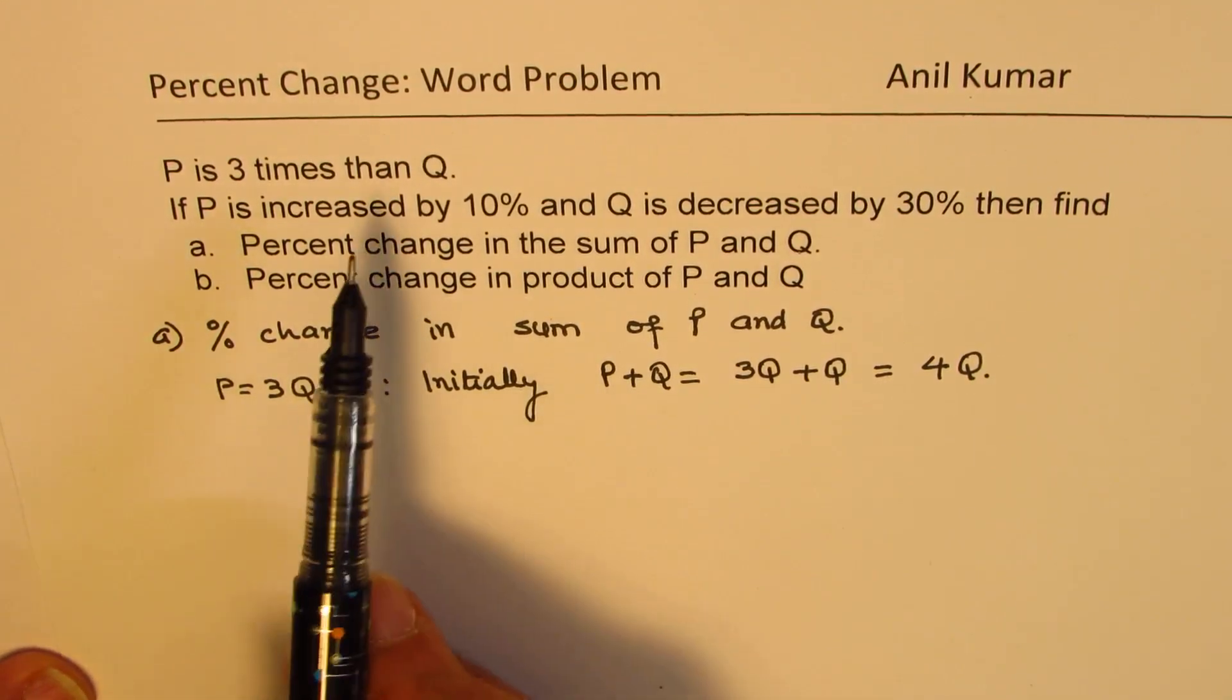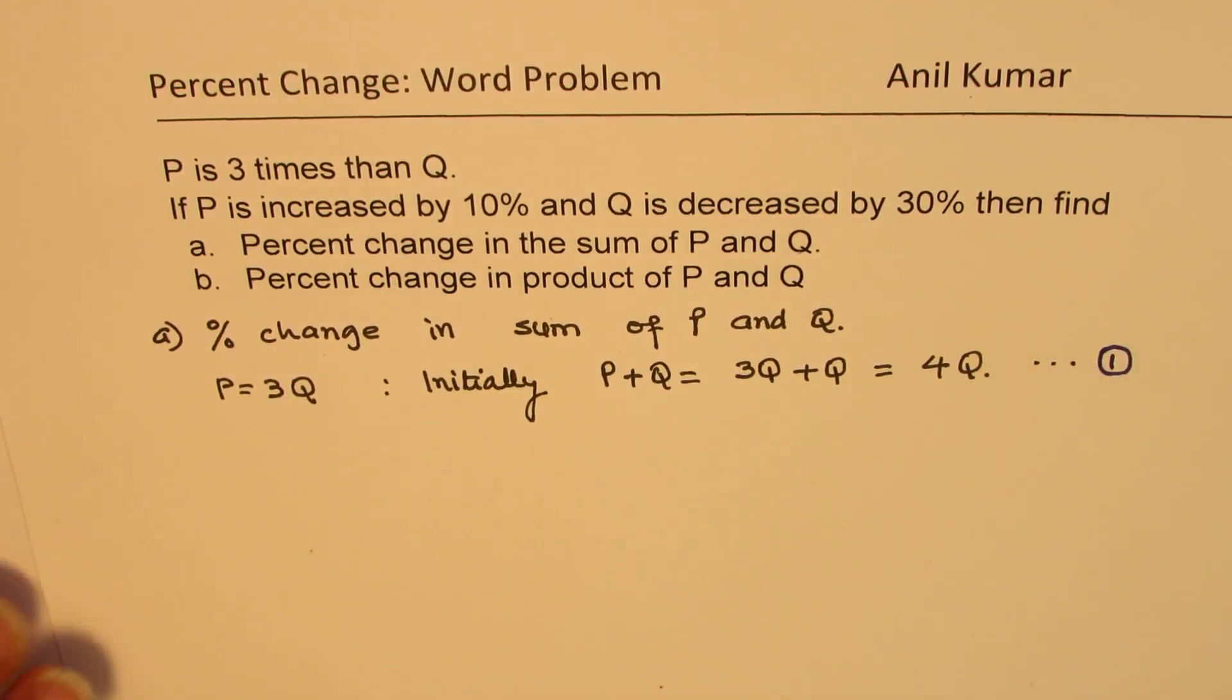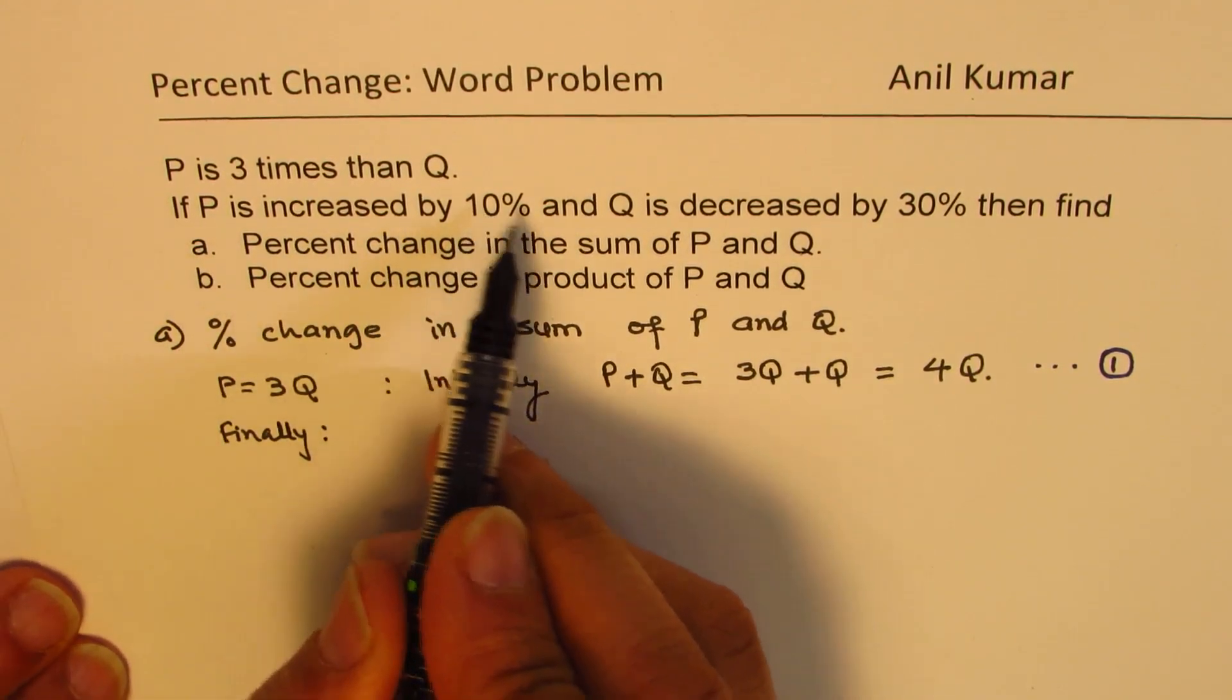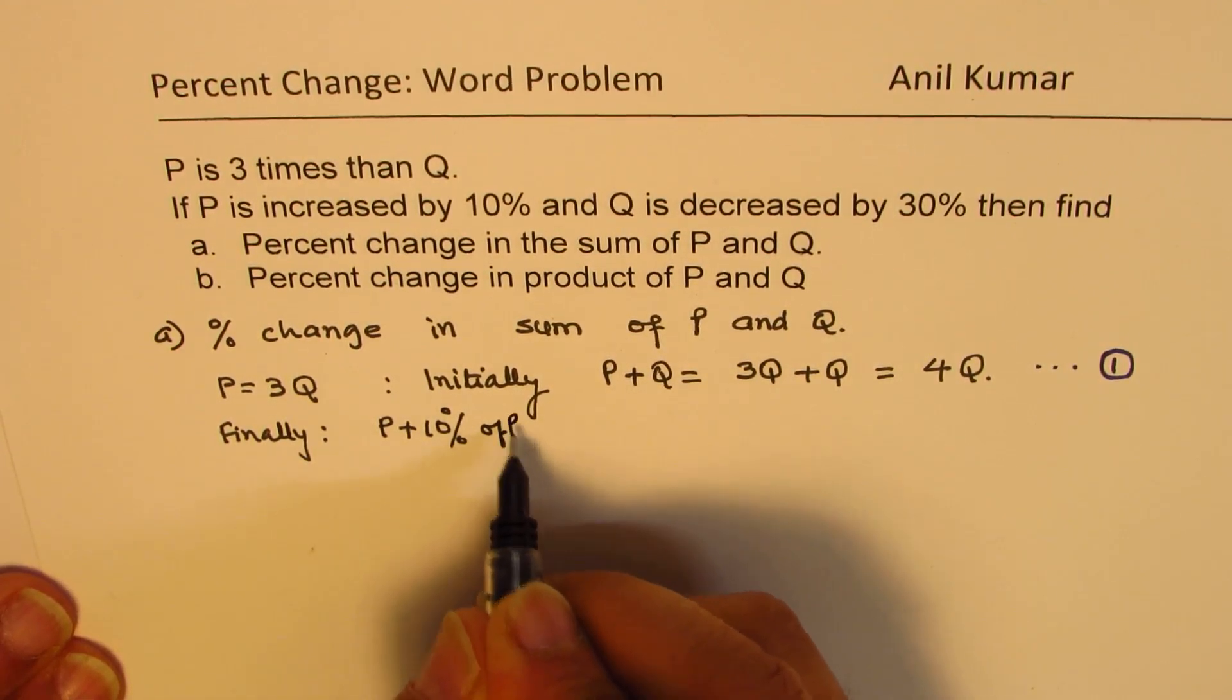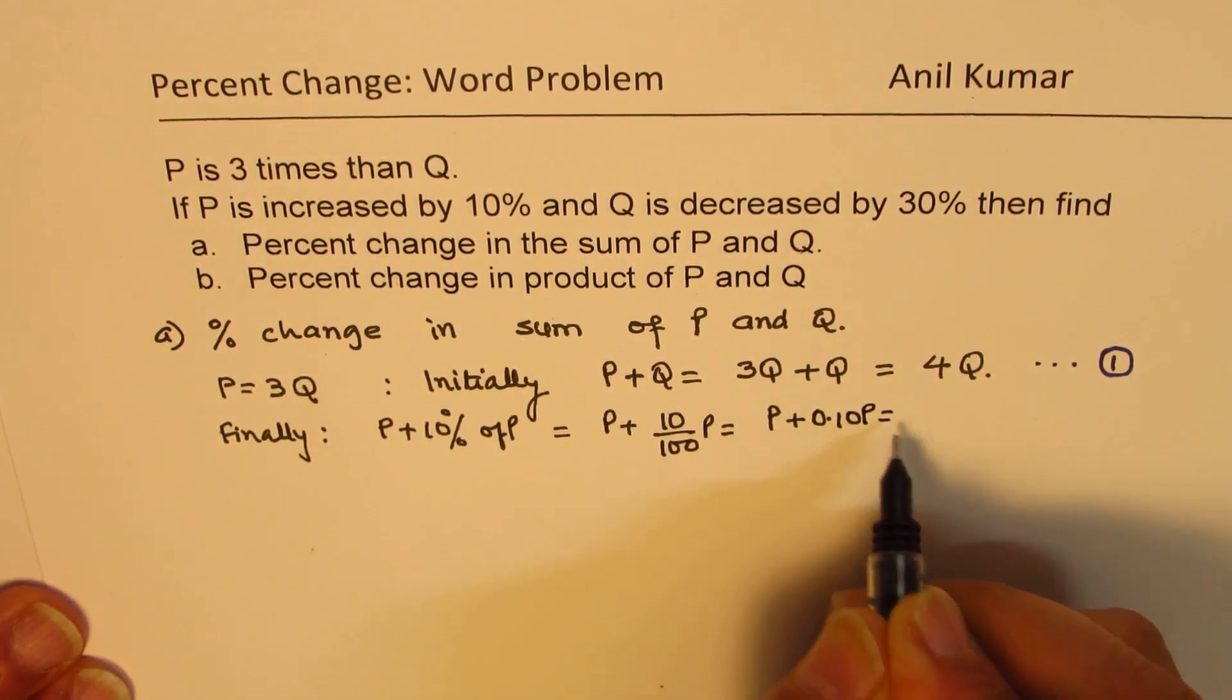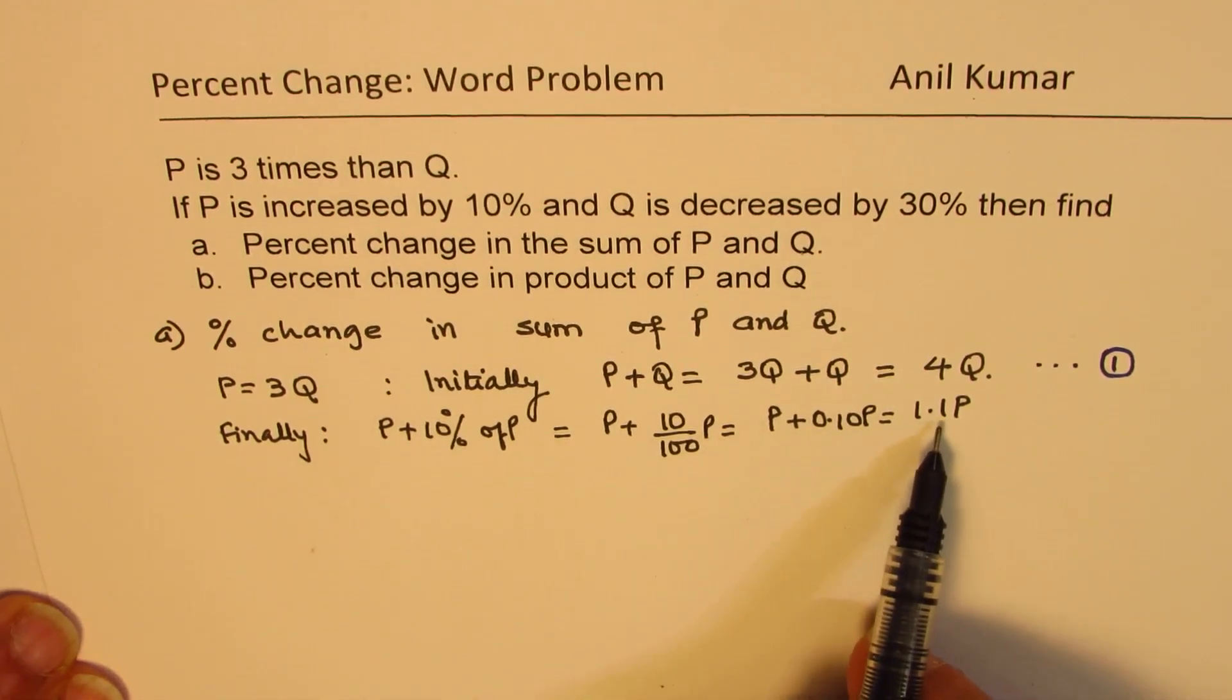That is what we have to begin with. We'll call this as initial condition as our condition number one. Now, finally, what happens? Finally, P is increased by 10%, so that means P plus 10% of P. That means P plus 10 over 100 of P, which is same as P plus 0.10 of P or 1.1 P. I have shown you a couple of steps in between, since some of you might need those steps. But you could directly also write 1.1 P.